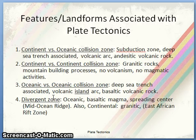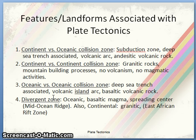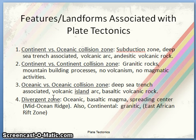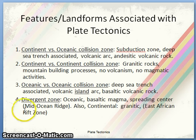The features and landforms associated with plate tectonics include: continental versus oceanic collision, which creates subduction zones, deep sea trenches, volcanic arcs, and acidic volcanic rock. Continent versus continent collision produces granitic rocks and mountain-building processes, with no volcanism or magmatic activity. Oceanic versus oceanic collision forms deep sea trenches and volcanic island arcs with basaltic volcanic rocks. Divergent zones form oceanic basaltic magma, spreading centers, and mid-oceanic ridges; the East African Rift Zone is an example.